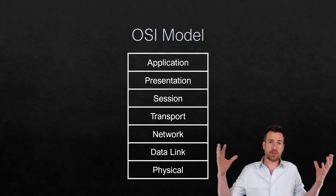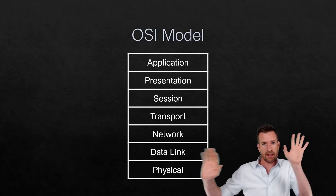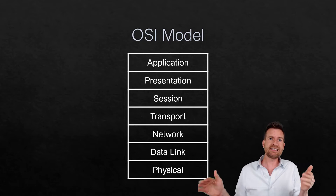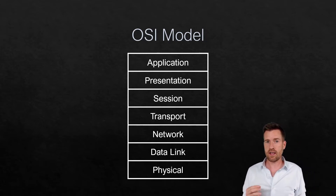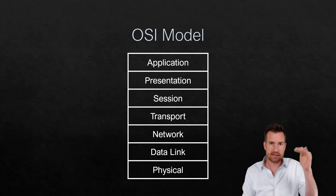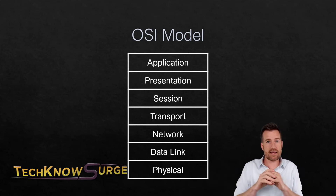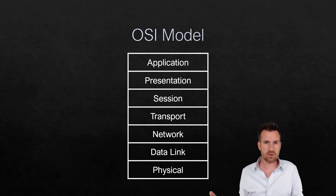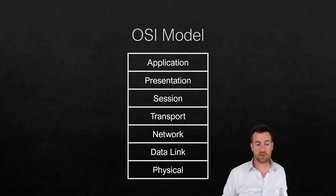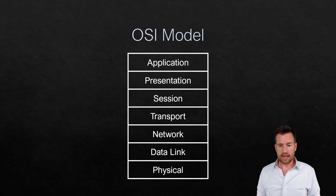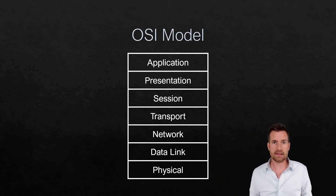As these networks grew, so did other countries using this same technology. But they were being developed separately in some of these different countries, and there was a need to communicate between countries. The International Organization for Standardization decided to create a layer system — a model that you could develop technology with and still have standardization, so communication could happen from country to country and between different protocols. In 1984, the ISO created this model to help facilitate the growth of these networks.